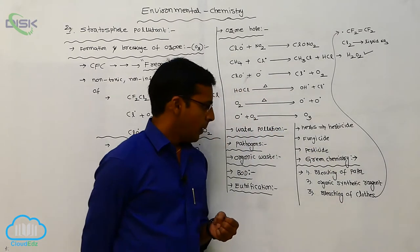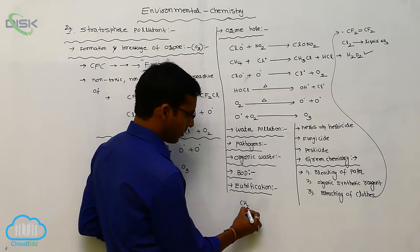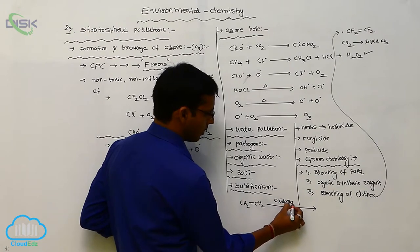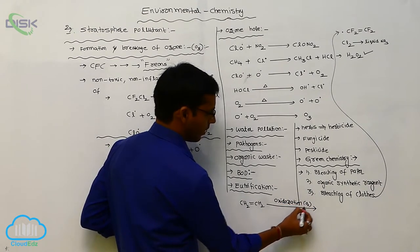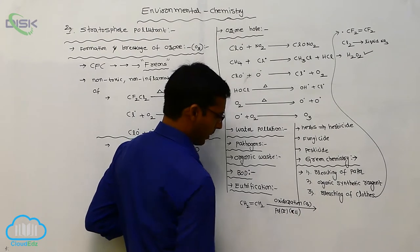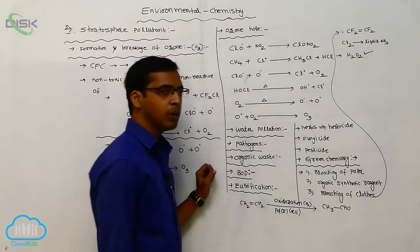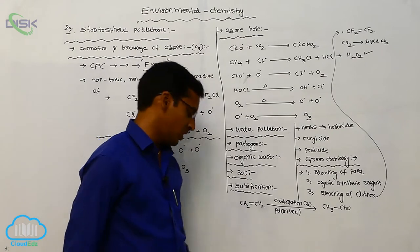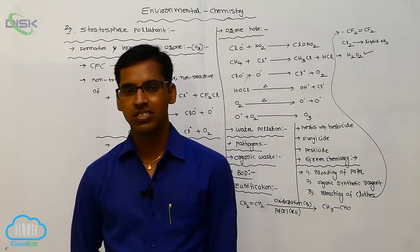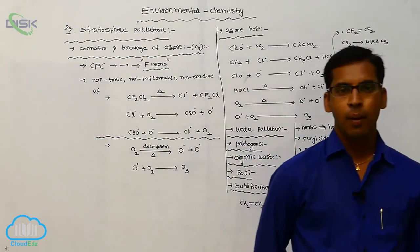Organic synthetic reagent. Ethylene molecule undergoes oxidation in presence of palladium 2 or copper 2 complexes. In presence of these catalysts, it is directly converted to acetaldehyde. The catalyst oxidation state is plus 2. This is the direct preparation method by using green chemistry.